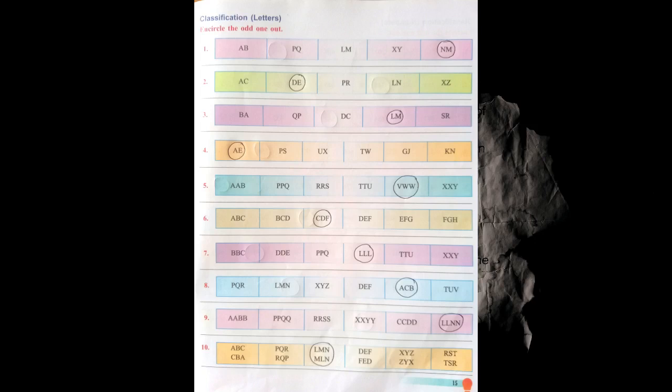Now six: ABC, BCD, CDF, DEF, EFG, FGH. CDF is the odd one because all the other groups are in consecutive sequence — A B C, B C D, D E F, E F G, F G H — but in CDF the letter E is missing between D and F, making it the odd one.